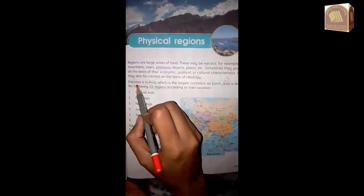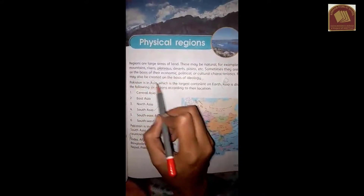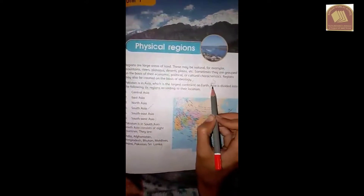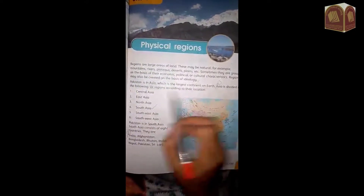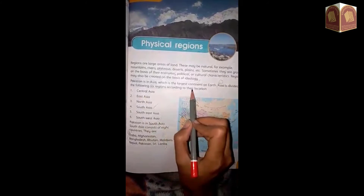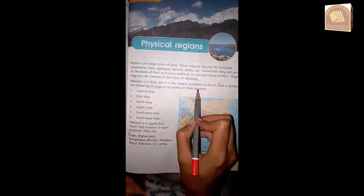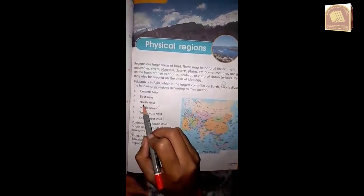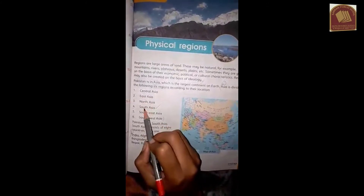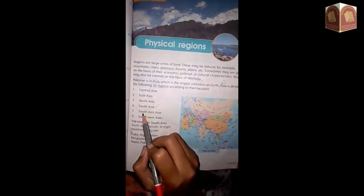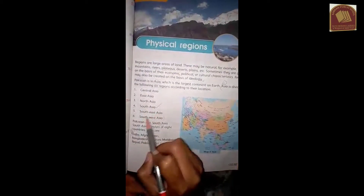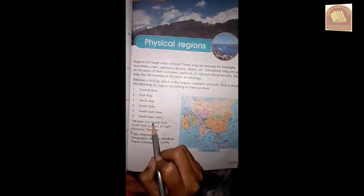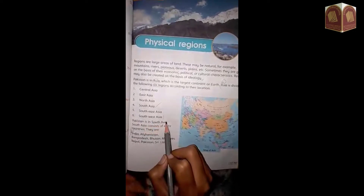Pakistan is in Asia, which is the largest continent of the earth. Asia is divided into the following six regions according to their location: Central Asia, East Asia, North Asia, South Asia, South East Asia, and South West Asia. Pakistan is in South Asia.